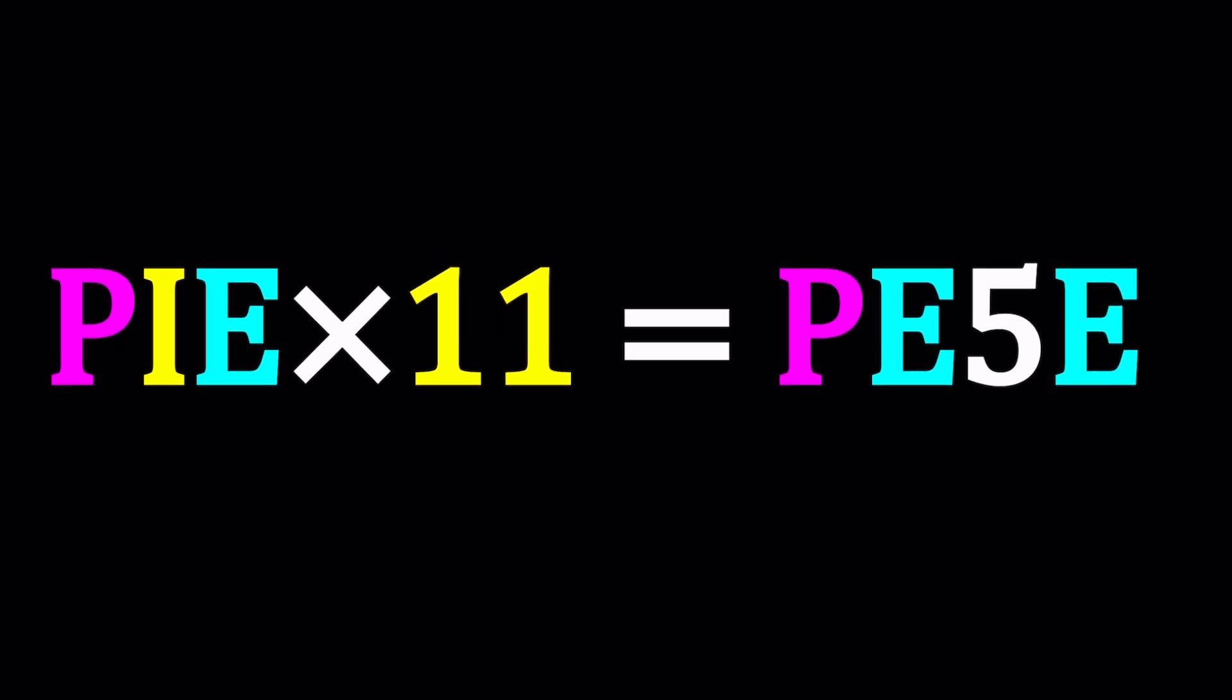First of all, P-I-E or just pi is a three-digit number as you can see here. So we can go ahead and replace it with 100P + 10I + E. That's how you decompose it, right? Multiply that by 11 and you get this four-digit number.